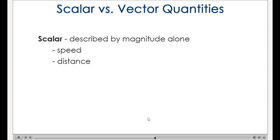Speed is a scalar quantity. That means it's described by only a number. For instance, 10 miles per hour or 35 feet per second. Distance is also a scalar and can be described by only a magnitude.